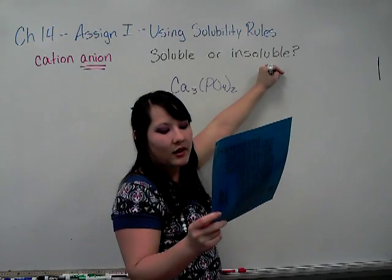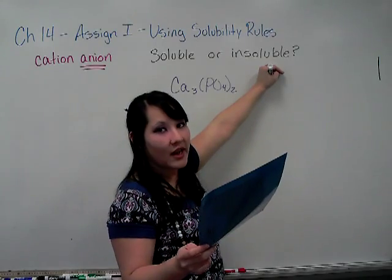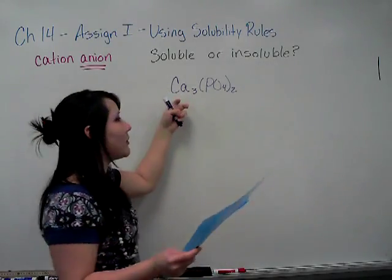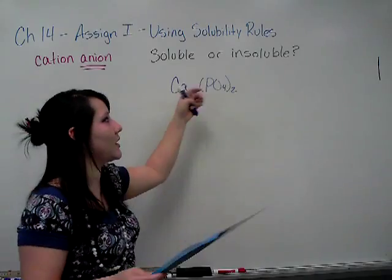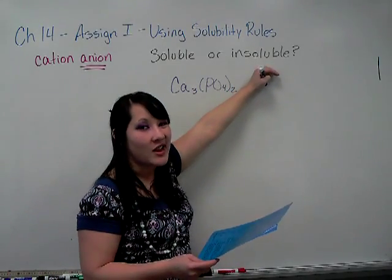Let's check and see. Except with group one and ammonia. So if calcium is in group one, then it's going to be an exception and that'll make it soluble instead.